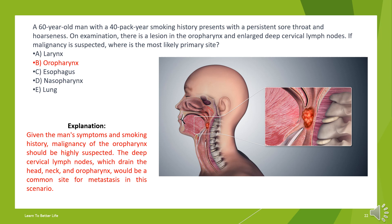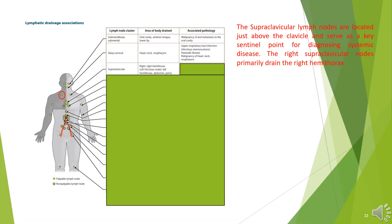The answer is B. Oropharynx. Given the man's symptoms and smoking history, malignancy of the oropharynx should be highly suspected. The deep cervical lymph nodes, which drain the head, neck, and oropharynx, would be a common site for metastasis in this scenario.